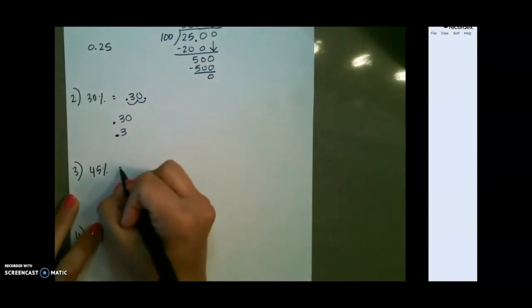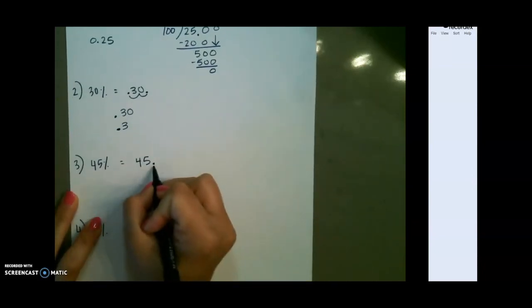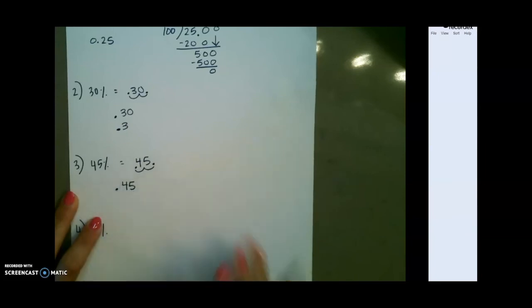For 45%, again, we have to add our decimal at the end of our number and move it two places to the left for 45 hundredths or .45.